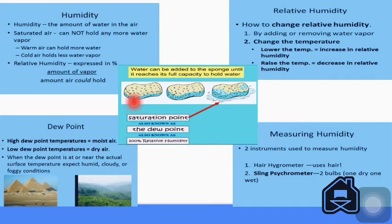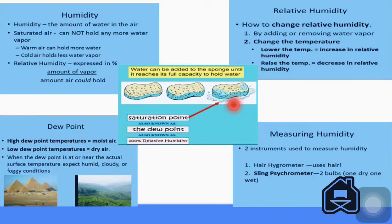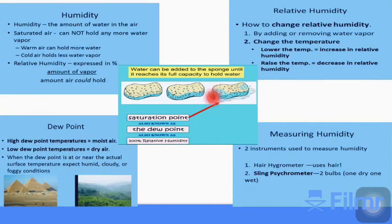The first sponge you see has more absorption of water. It means that 100% water vapor is remaining to be absorbed in the first sponge. In the second sponge, 50% water is absorbed and 50% capacity is left. That's why this is called relative humidity. The third sponge reached its saturation point. Now there is no more capacity to hold more water. That's why water droplets start coming out from the third sponge.